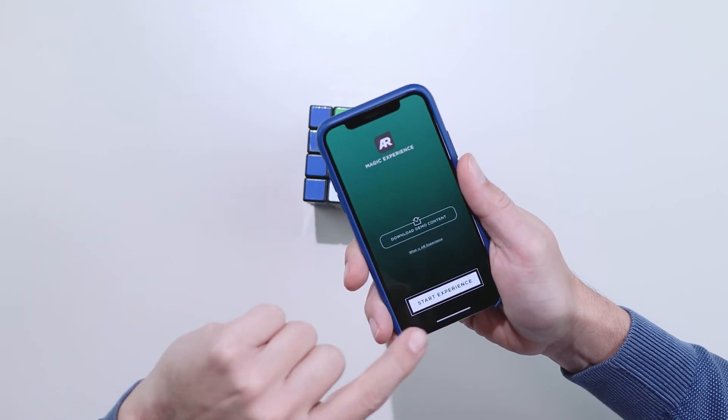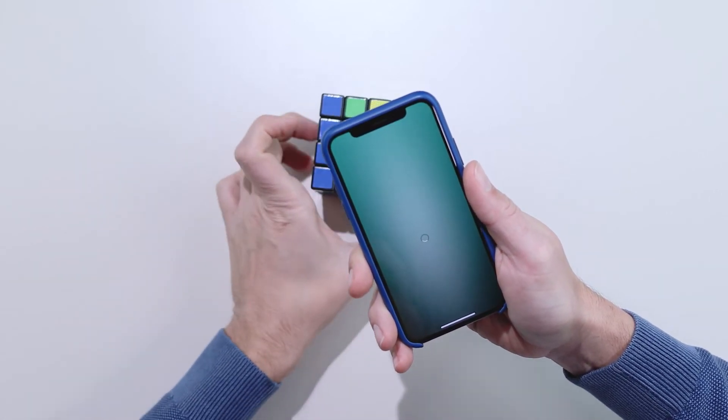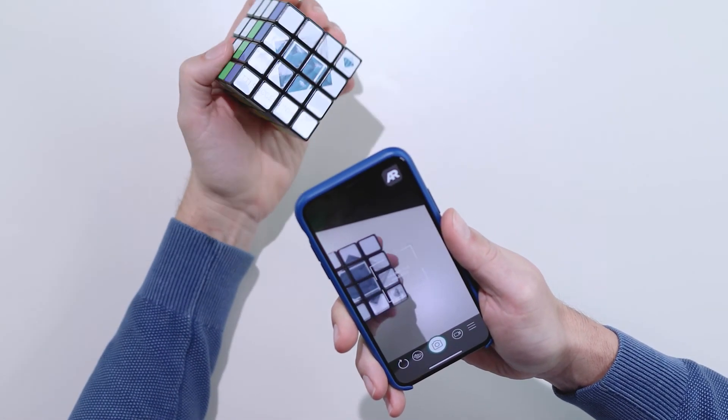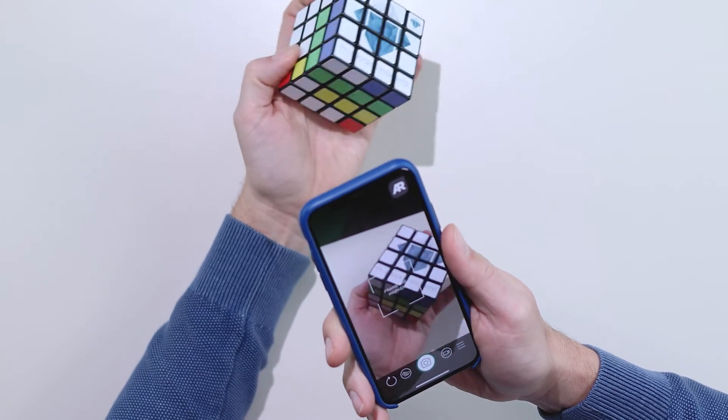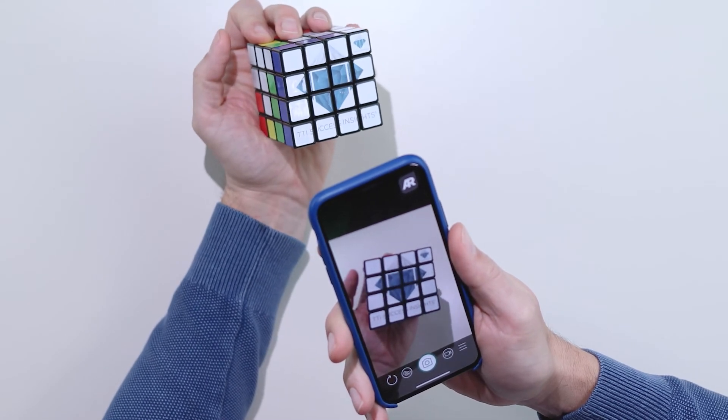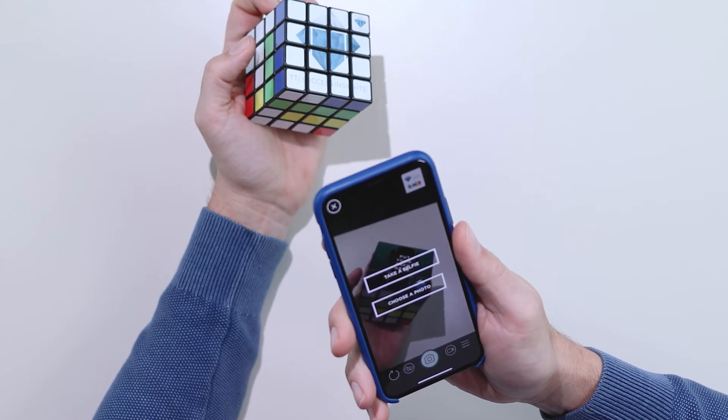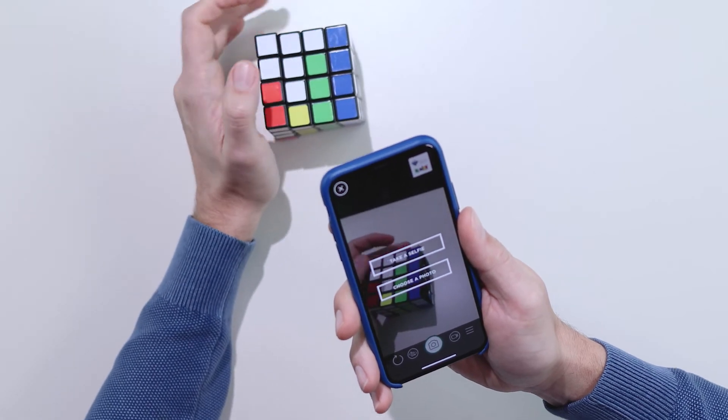Open the app, tap Start Experience, and point at one of the TTI Success Insights logos on either side of the TTI SI DISC cube. Be sure to pick the logo that is the most upright, so that your selected picture will be too.